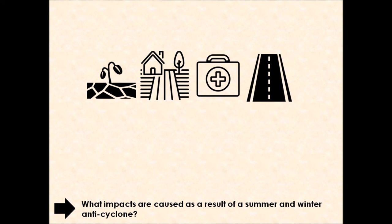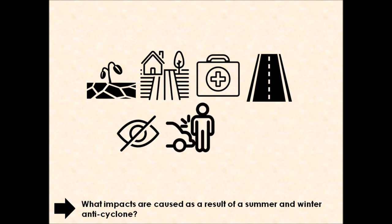If we start to think about a winter anticyclone, those frosty air conditions that it can cause. Winter anticyclones can bring with them fog conditions, that mist due to that air descending towards the ground surface, and that can lead to reduced visibility. Visibility meaning it's harder to see. If we have reduced visibility when we're driving, that can lead to road traffic accidents. If the roads are icy or frosty, that can lead to traffic accidents as well, as well as people falling over and injuring themselves.